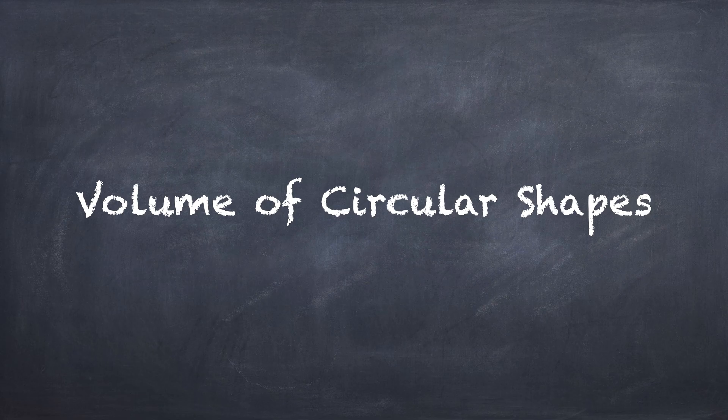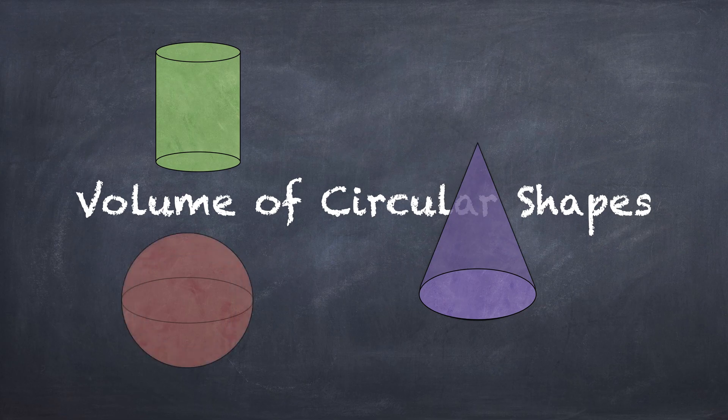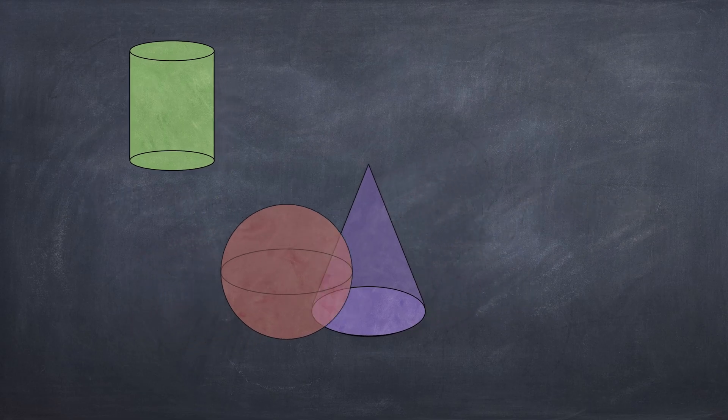In this video we're looking at volume of circular shapes. So that's shapes with a circle inside it, but it's going to be a 3D shape. So you got a cylinder, a cone, a sphere - three examples of circular 3D shapes where you have to find the radius first.